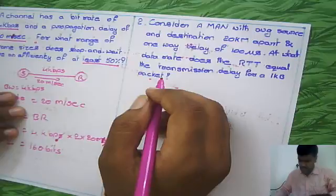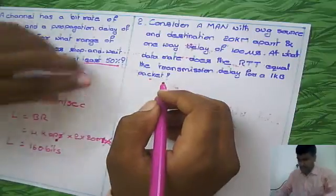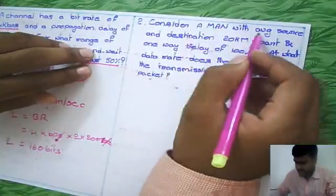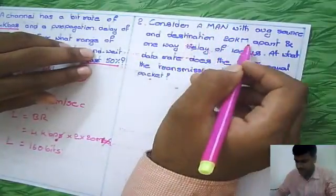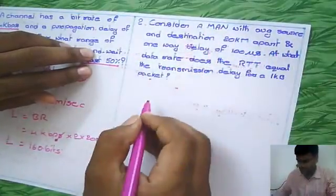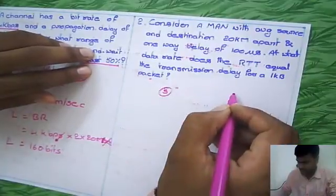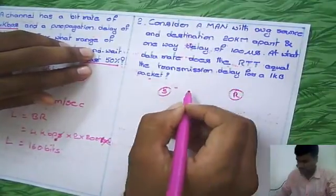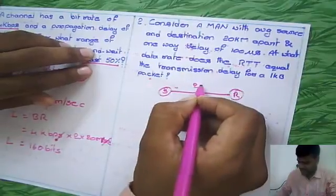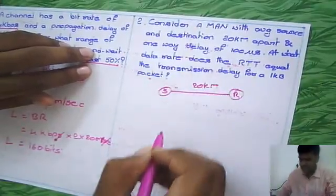Next, if you see the next problem, here the source and destination are 20 km apart. This is the source and this is the receiver - sender and receiver - and the distance is 20 km.